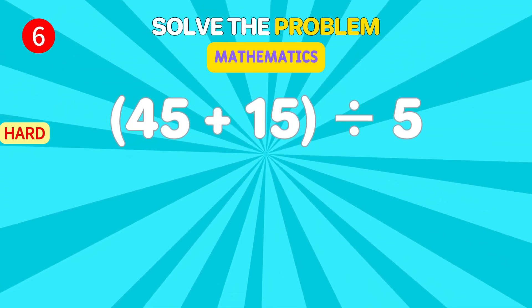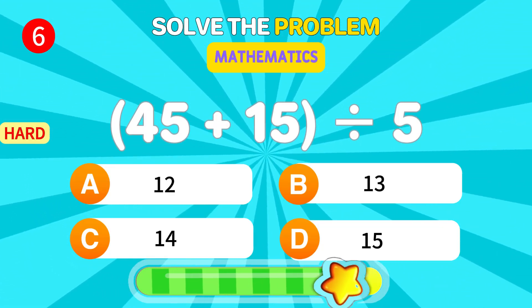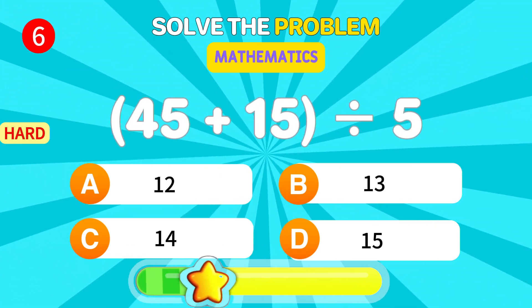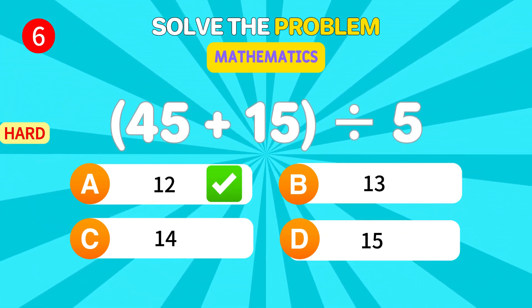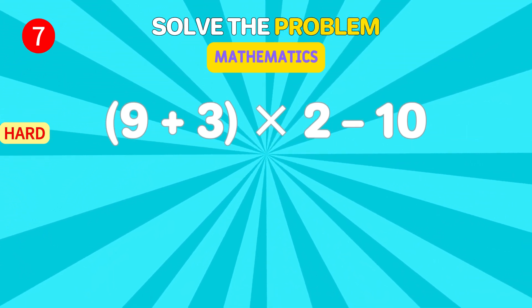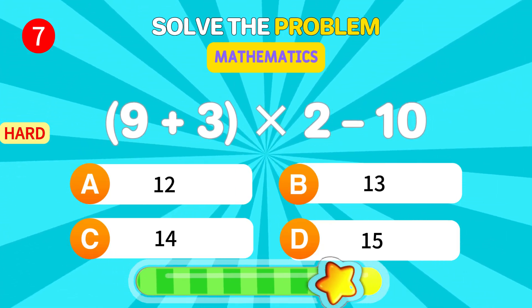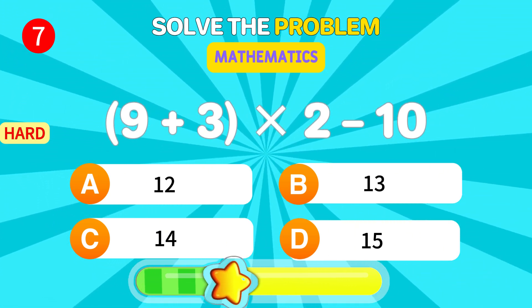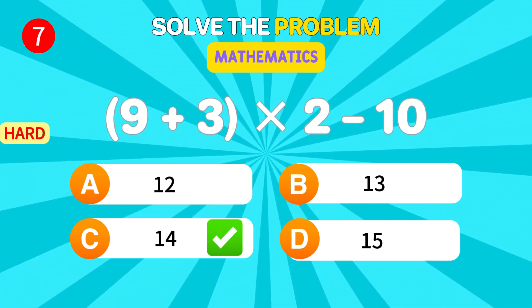Add 45 and 15, then divide by 5. 12. Smart thinking. Solve this tricky one. 9 times 3 times 2 minus 10. 14. Nice work.